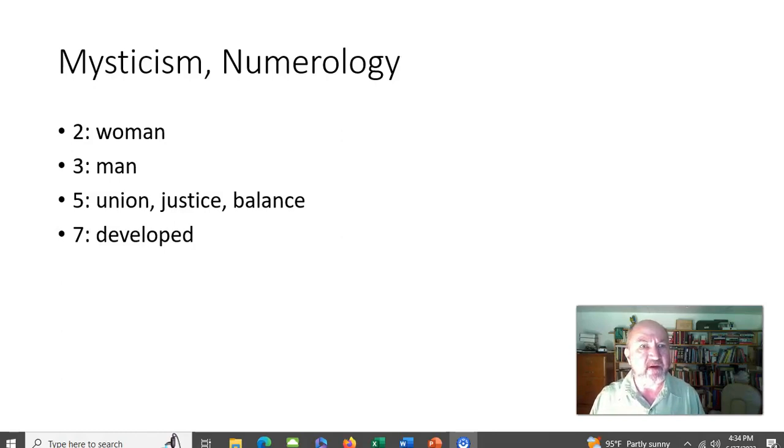The first even number they call a woman. The first odd, that's number two. The first odd number they identify with men. And then they begin to work from there to see how these things work out. For example, number five. Five is two plus three, right? Even and odd. Male and female. And so that comes to resemble or to symbolize, that's the word I want, symbolize.